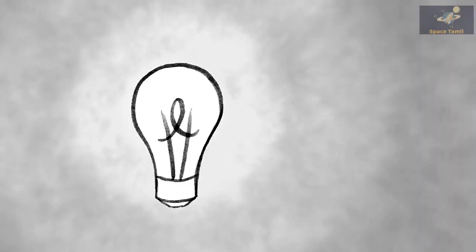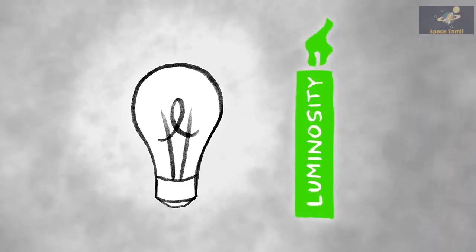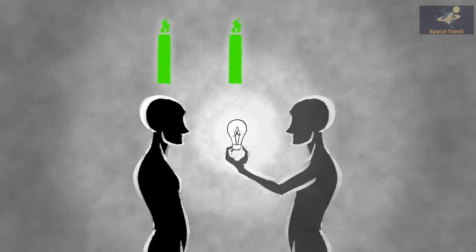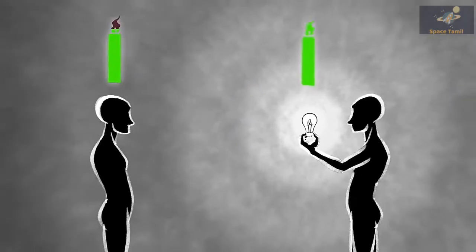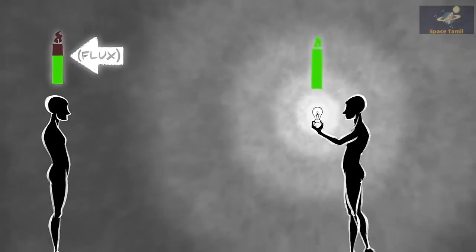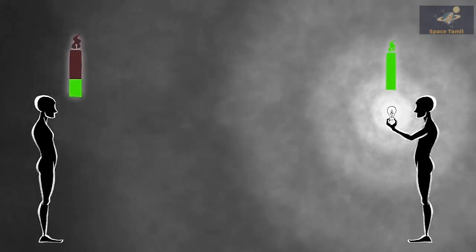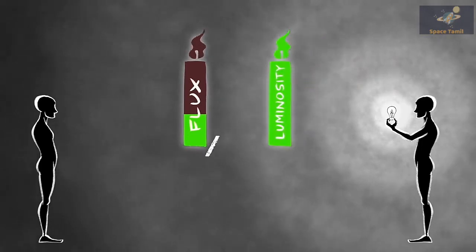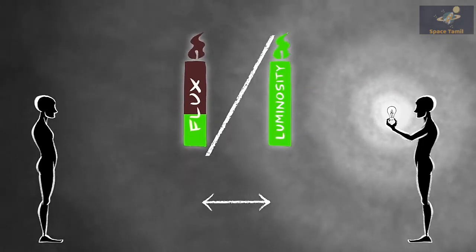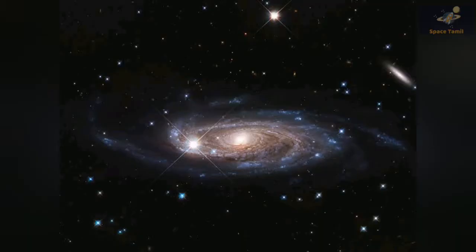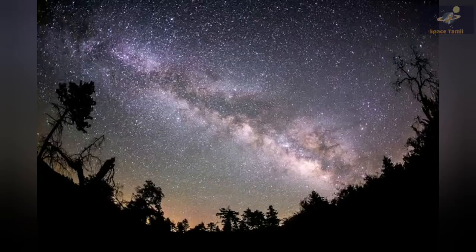In this case, you can use a bulb. We use the luminosity to bring the bulb to the front, a little bit of green. If we use a bulb on the front, we can see how much distance we can measure.